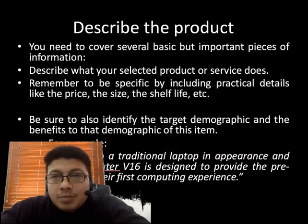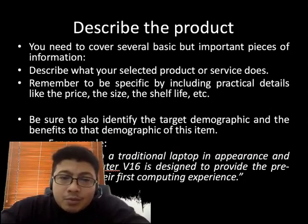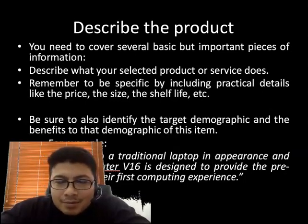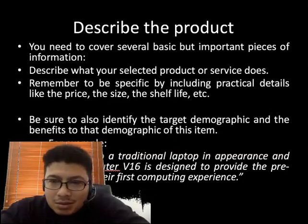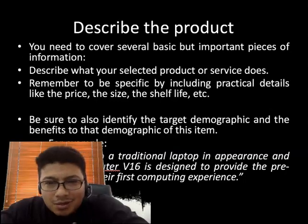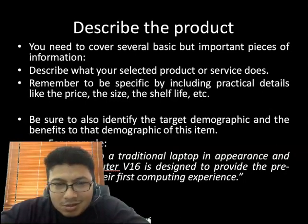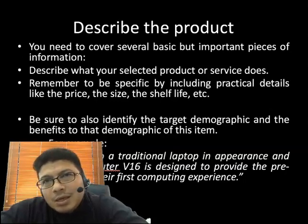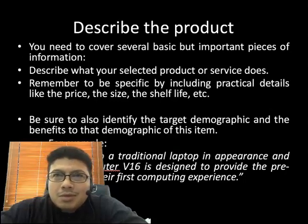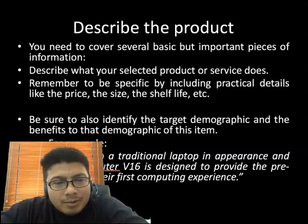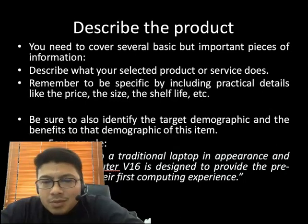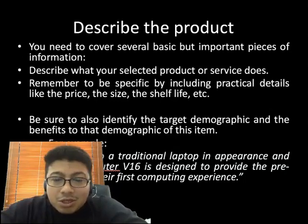When writing a product review, it is a good idea to keep in mind what we need to cover. First, you need to cover several basic important pieces of information — like what the product or service does, what its function is. Remember to be specific by including practical details like the price, the size, and the shelf life. Shelf life refers to the durability — for example, if you are talking about something with a battery like a computer, how long can it last: maybe 5 to 8 hours, and how many years, maybe 7 to 8 years.